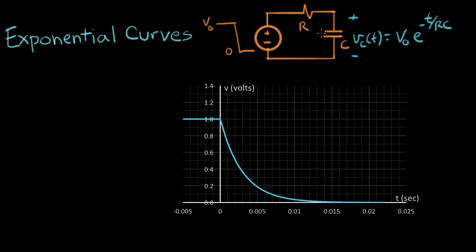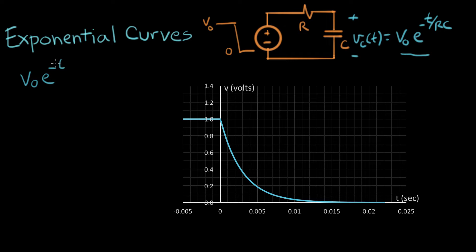We get a current coming out of this capacitor flowing around in a circle, and that's the natural response of this RC circuit. I want to look at the properties of this function right here — V-naught e to the minus T over RC. The first thing we can look at is this V-naught value. That's this value here — this is V-naught. In this particular chart, V-naught was equal to one volt.